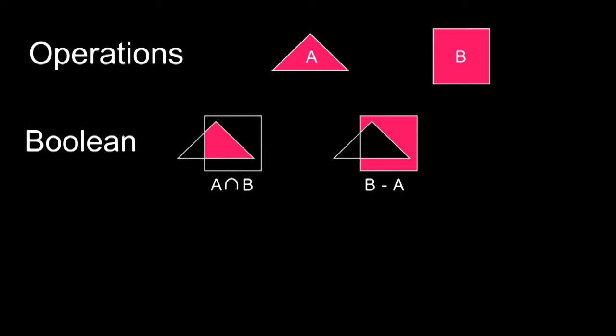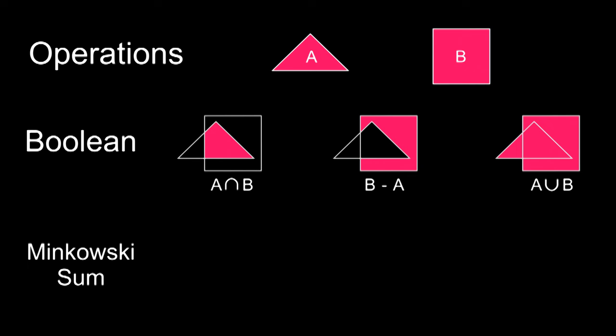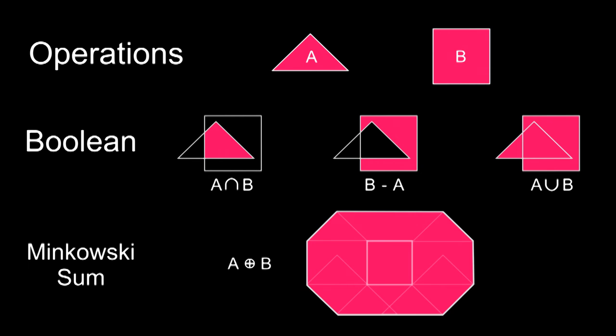You need to do Boolean operations, things like intersecting shapes, subtracting shapes, taking the union of two shapes, and you need something called a Minkowski sum. Now this sounds complicated, but it's really not that bad.